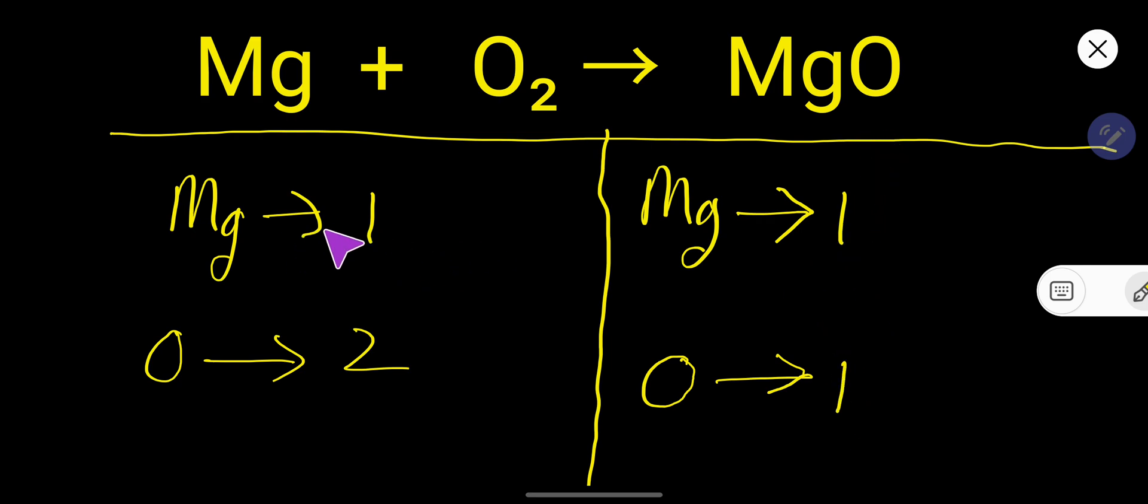So here magnesium 1 to 1 is balanced, but oxygen here is 2, here 1. So oxygen is not balanced.